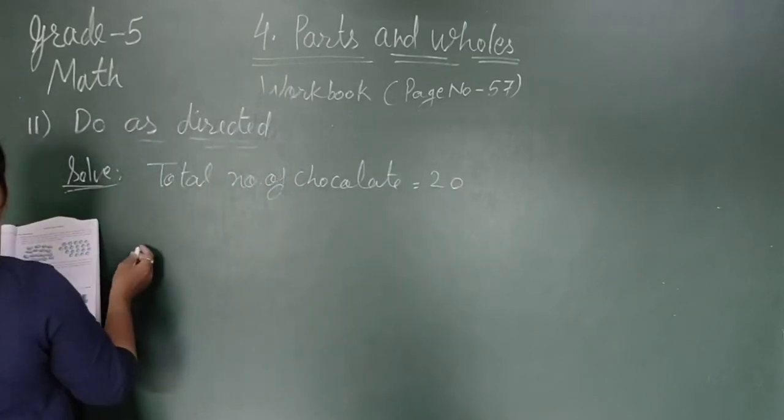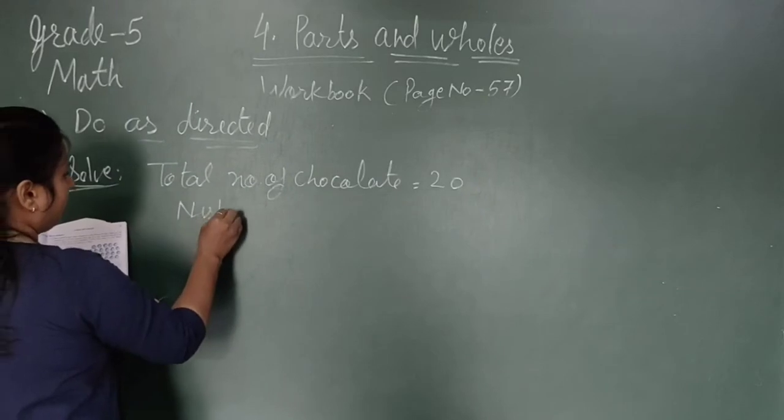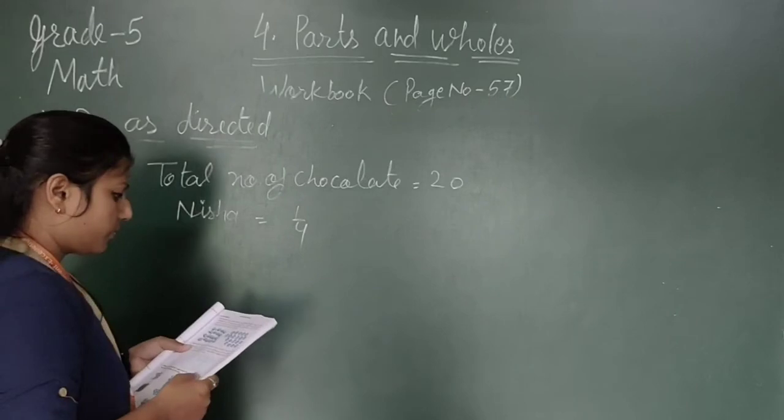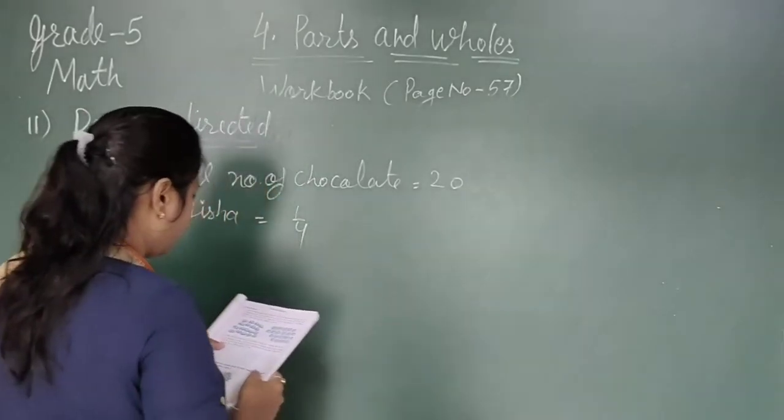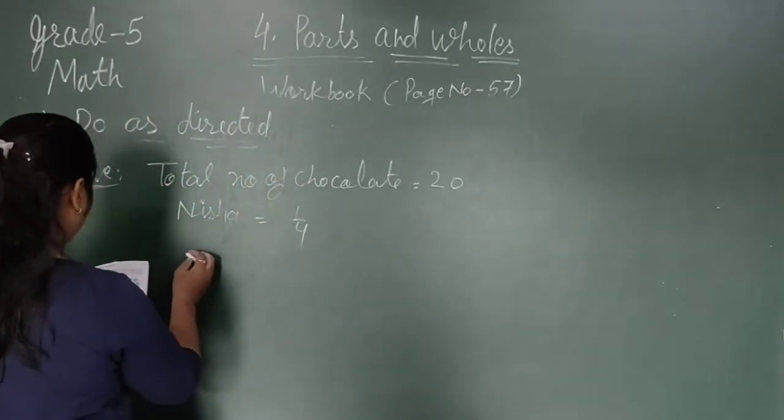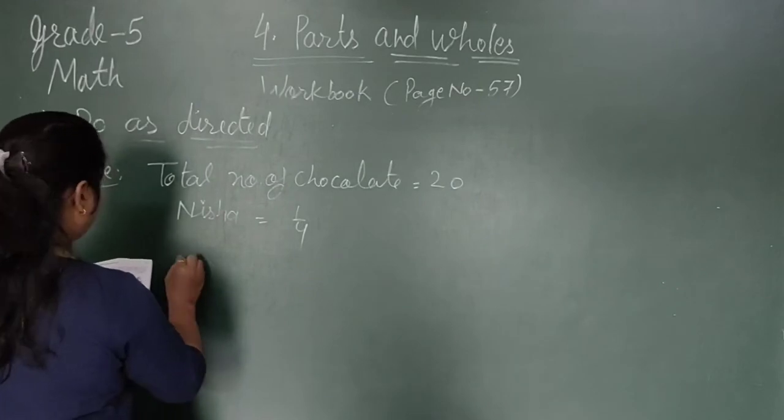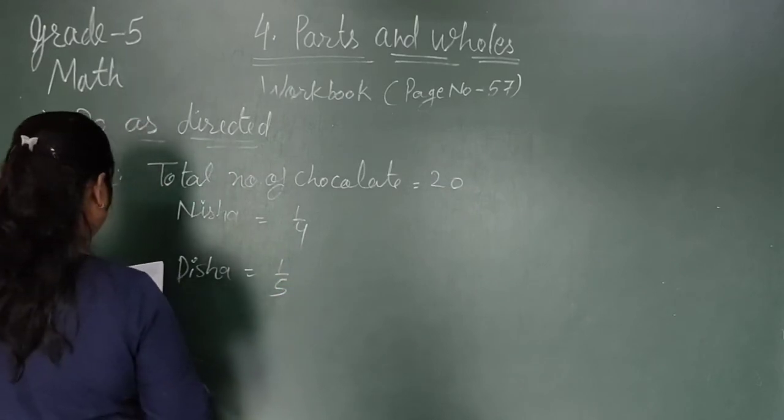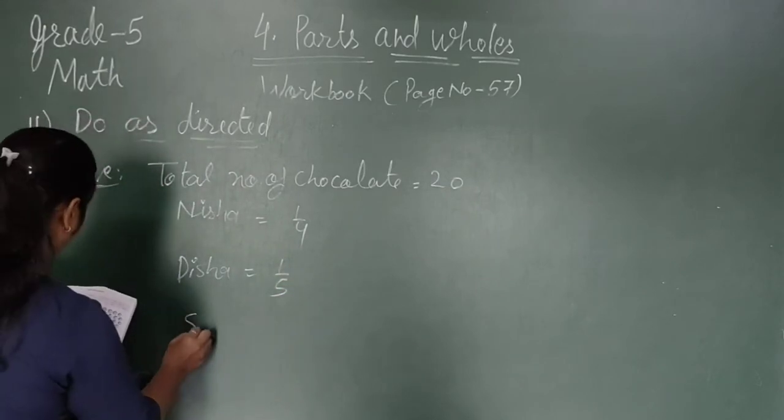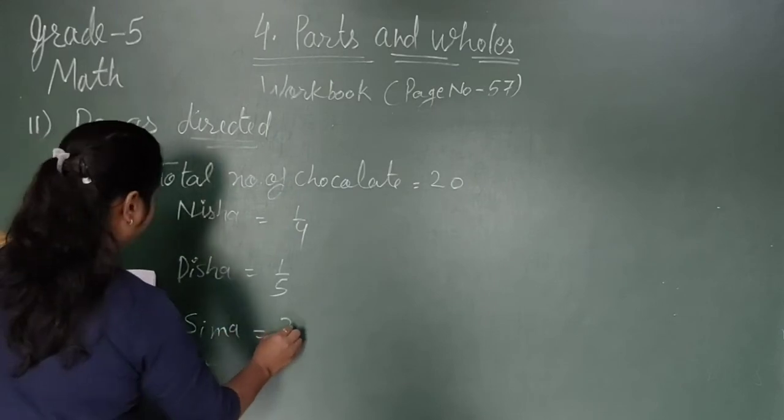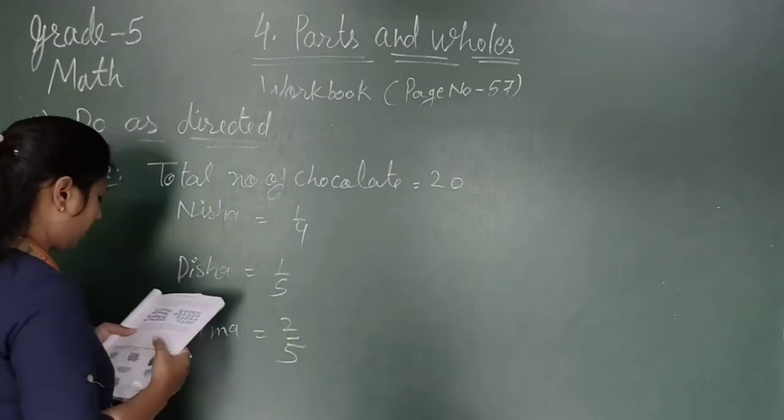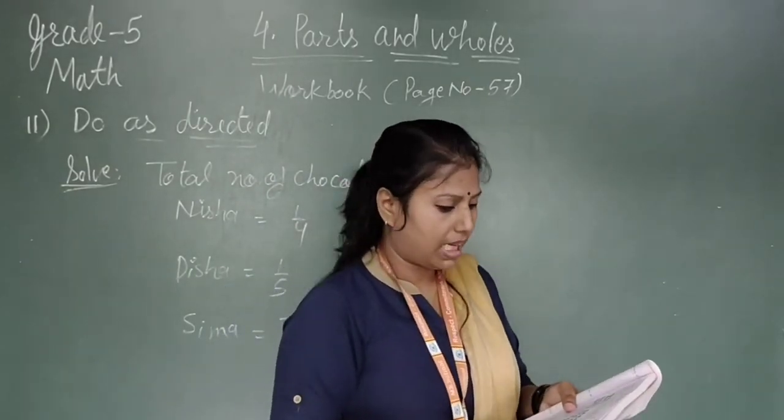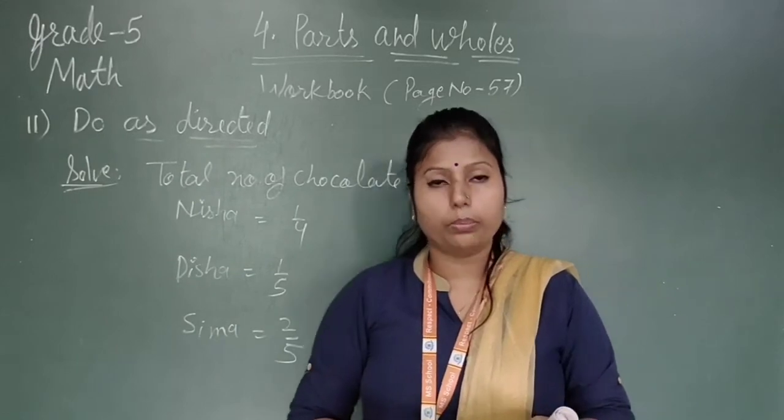She gives one-fourth of the chocolates to Nisha. The total number of chocolates is 20. Nisha will get one-fourth, Disha will get one-fifth, and Shima will get two-fifths. Circle Nisha's share in blue, Disha's share in orange, Shima's share in violet, remaining share in black.